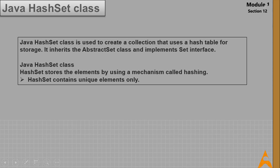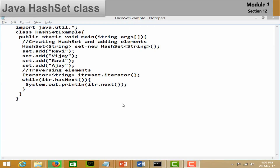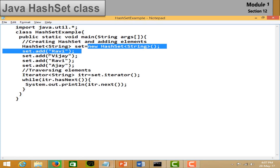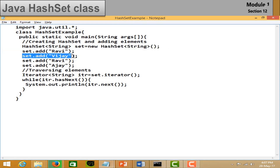Now let's discuss HashSet. Java HashSet class creates a collection that uses a hash table for storage. It inherits AbstractSet class and implements Set interface. Key points: HashSet stores elements using a mechanism called hashing, and it contains unique elements only. In the example, import the util package, create a HashSet object, and add elements. Note that I added one element twice — HashSet will not accept duplicate values.